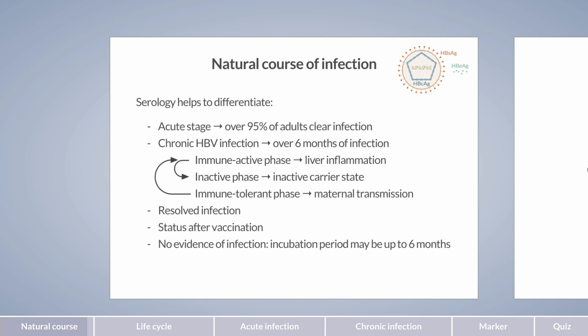An algorithm will be presented here of how these phases can be differentiated. To begin with, we will present the infectious cycle of hepatitis B virus and the antibodies and antigens involved.